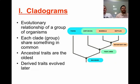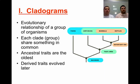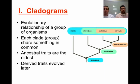A cladogram just shows evolutionary relationships of groups of organisms. Think of a clade as something that shares something in common with what it evolved from. When looking at a cladogram, ancestral traits are always going to be at the bottom or towards the left — those are the oldest — and derived or accumulated traits, the ones that evolve later through the lineage, are going to be towards the top or towards the right.